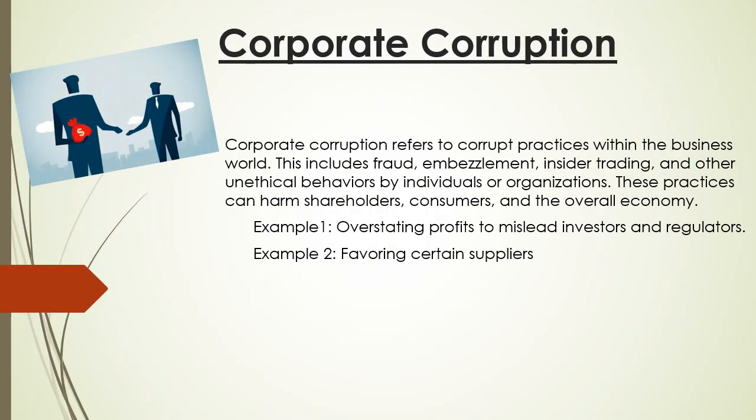The sixth form of corruption is corporate corruption. Corporate corruption refers to corrupt practices within the business world. This includes fraud, embezzlement, insider trading, and other unethical behaviors by individuals or organizations. These practices can harm shareholders, consumers, and the overall economy. Example 1: overstating profits to mislead investors and regulators. Example 2: favoring certain suppliers.